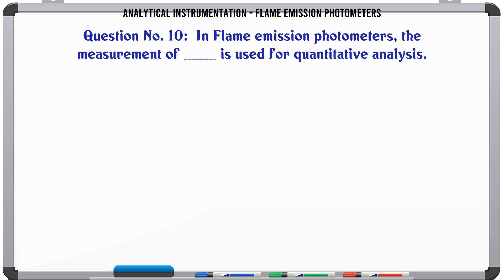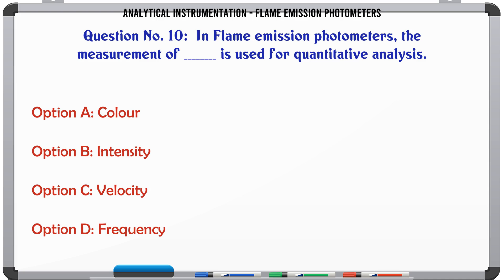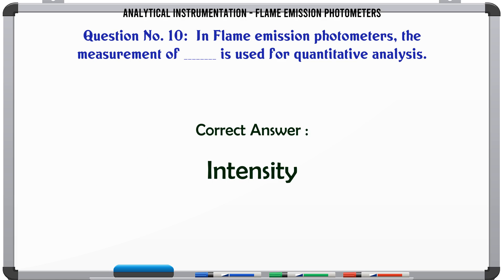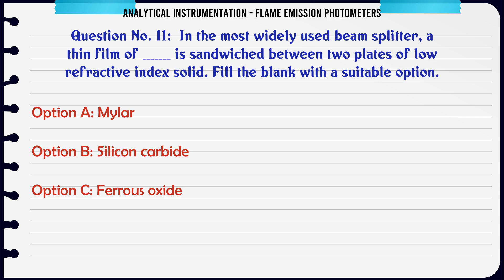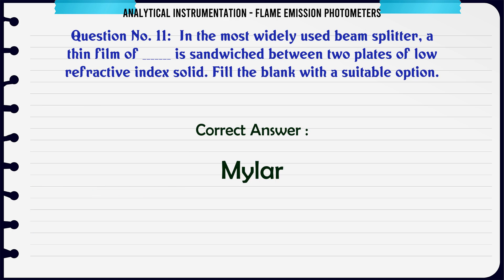In flame emission photometers, the measurement of which of the following is used for quantitative analysis? A. Color. B. Intensity. C. Velocity. D. Frequency. The correct answer is: Intensity. In the most widely used beam splitter, a thin film of what material is sandwiched between two plates of low refractive index solid? A. Mylar. B. Silicon carbide. C. Ferrous oxide. D. Silver chloride. The correct answer is: Mylar.